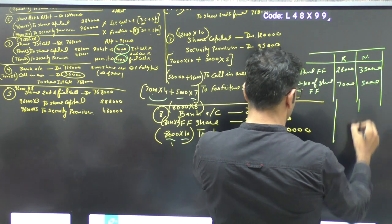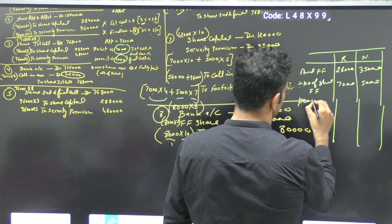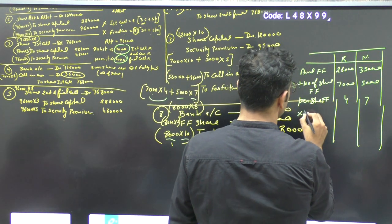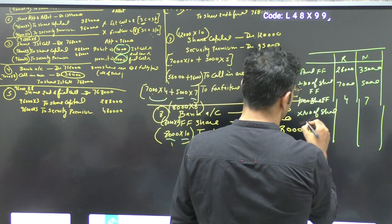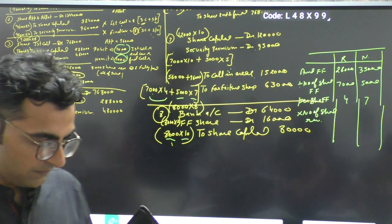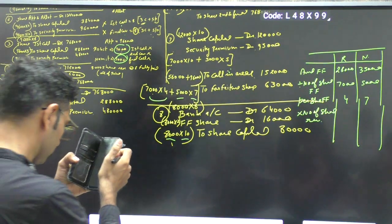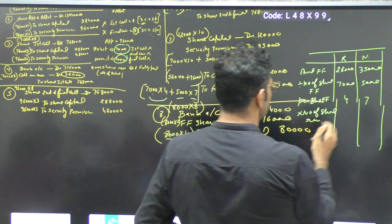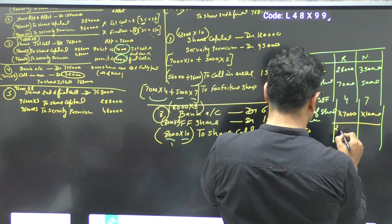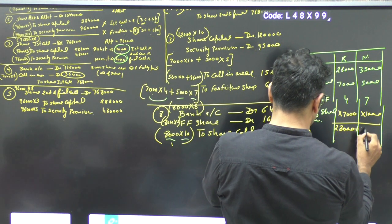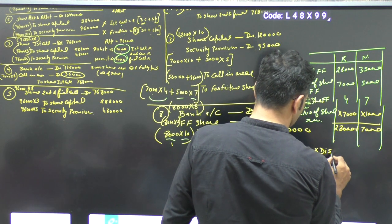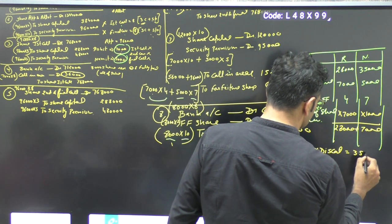Per share, how much is it? 4 and 7. Multiply number share issued. How much is it? 7,000 and 1,000, 8,000 and 1,000. 35. How much is it? 35,000.